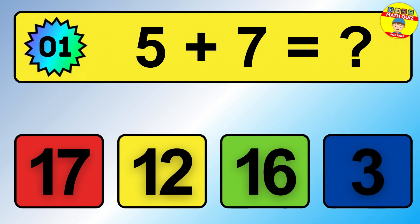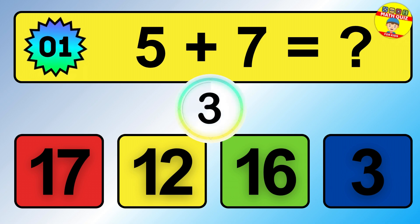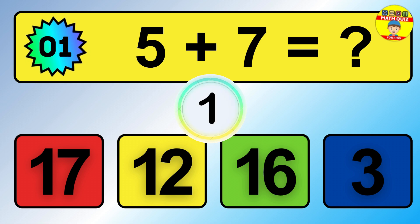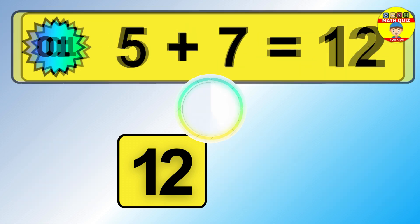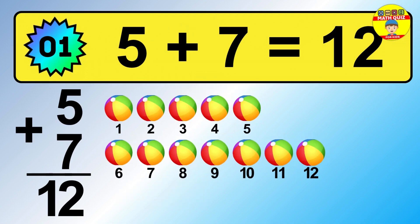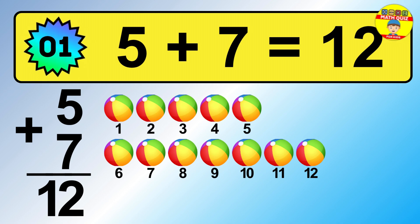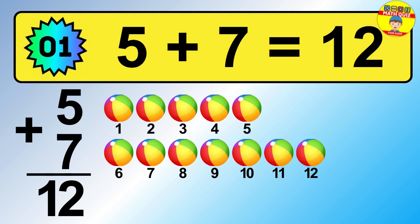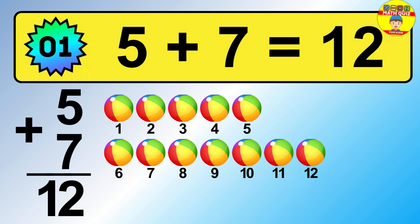Question 1. 5 plus 7 equals what? So the answer is 5 plus 7 is 12. Let's count it: 1, 2, 3, 4, 5, 6, 7, 8, 9, 10, 11, 12.